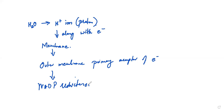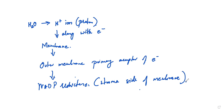This particular enzyme — NADP reductase — will be present on the stroma side of the membrane. The electrons will come out from that particular acceptor. Because we have first PS2 and then PS1, whatever electrons are there will come out from the acceptor of PS1.